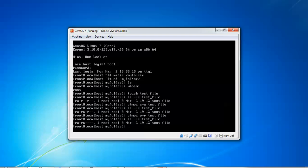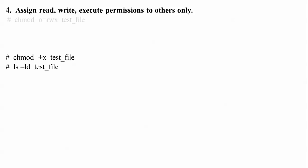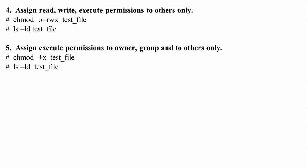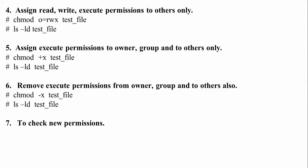The next step is to assign read, write, and execute permission to others only. 'chmod o=rwx' — where 'o' is others, 'r' is read, 'w' is write, and 'x' is execute. Then check the permissions by typing 'ls -ld' on the file. After that, to add execute permission to the group and owner, use 'chmod +x', then to remove execute permission from owner, group, and others, use 'chmod -x test_file'.